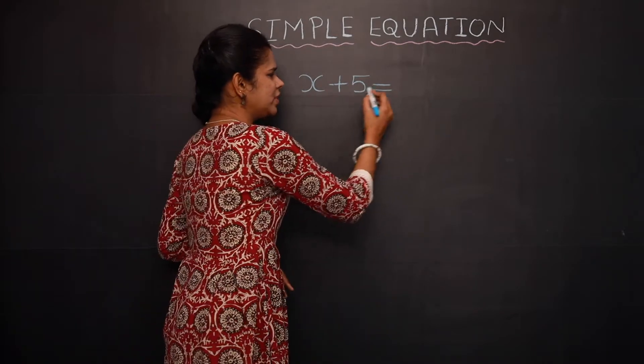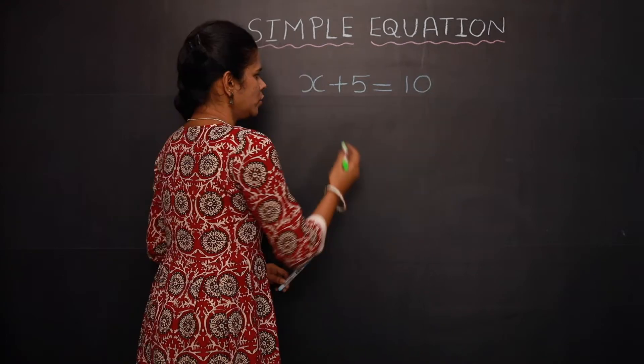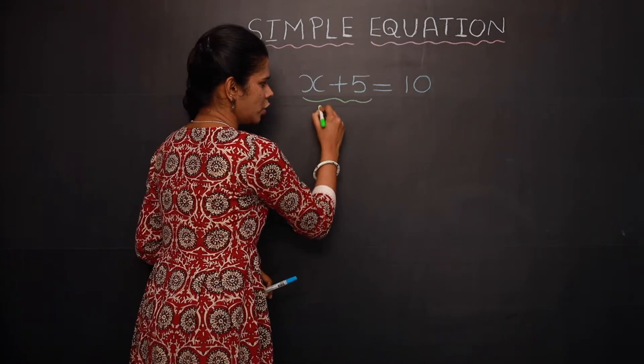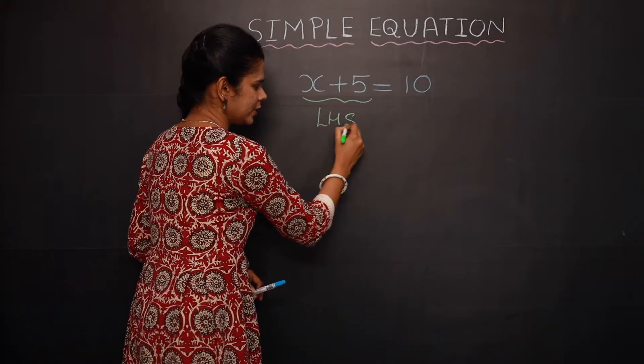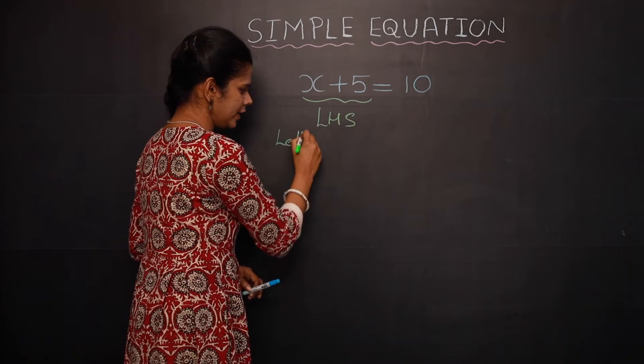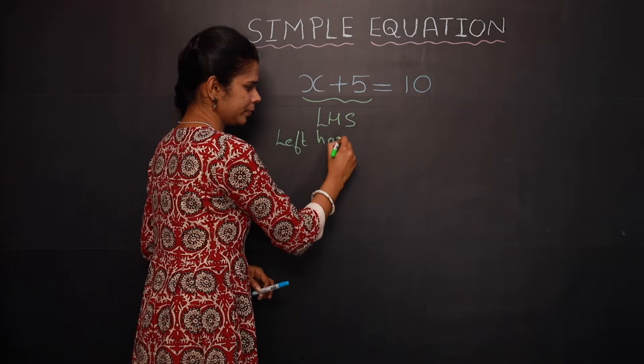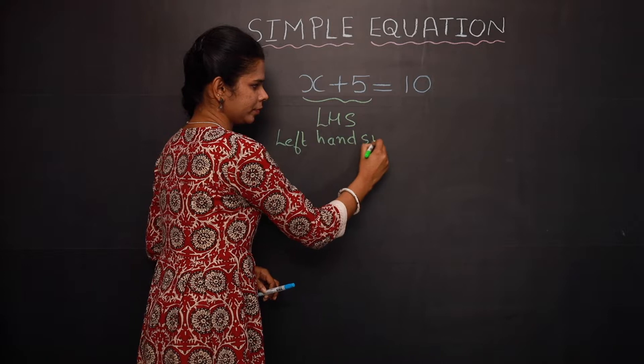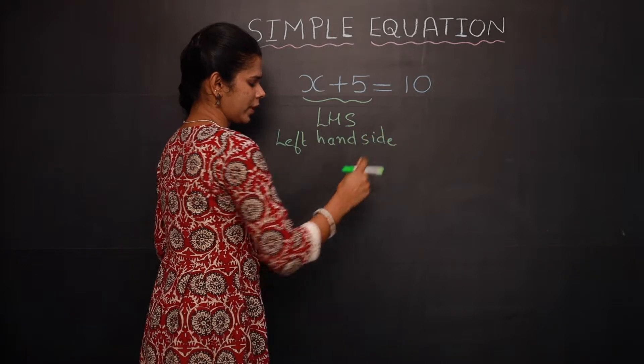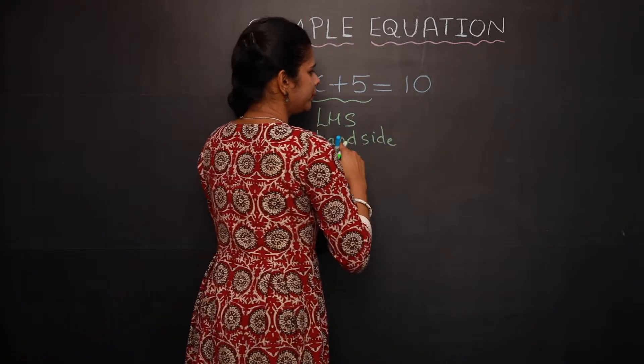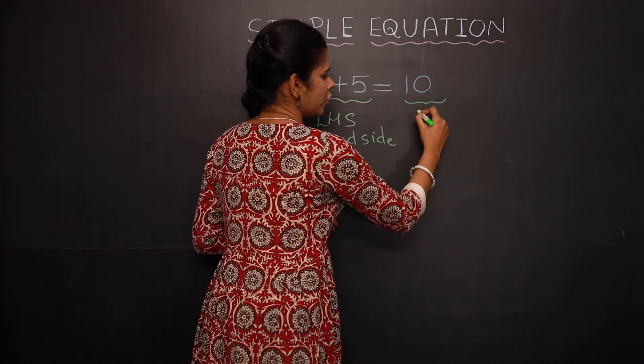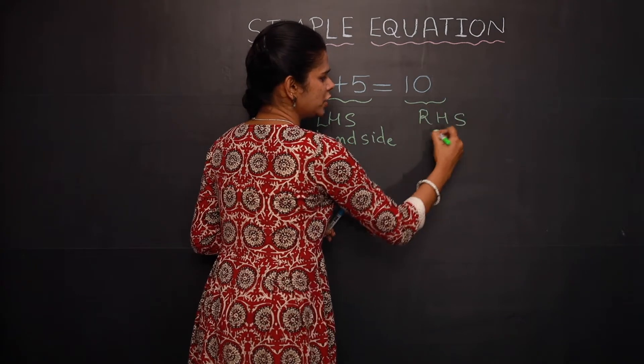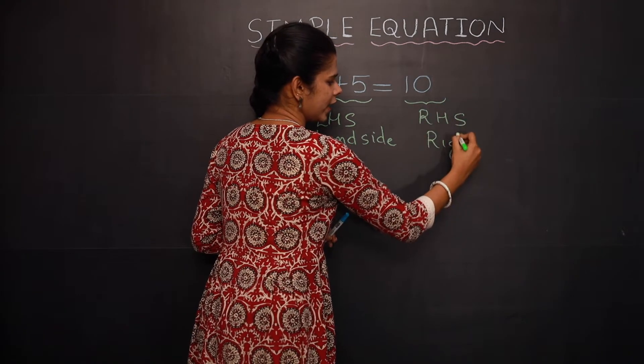Let's see an equation: x plus 5 is equal to 10. So this portion is your LHS, that is left-hand side, and this portion is your RHS, which is the right-hand side.